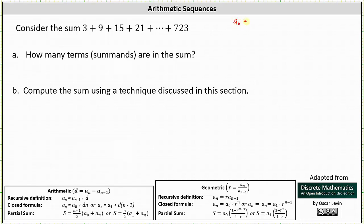A sub zero is equal to 3. And then from here, analyzing the sum, notice how the terms are increasing by 6. 3 + 6 = 9, 9 + 6 = 15, and so on. Therefore we have a sum of an arithmetic sequence, or an arithmetic series, where the common difference d is equal to 6.